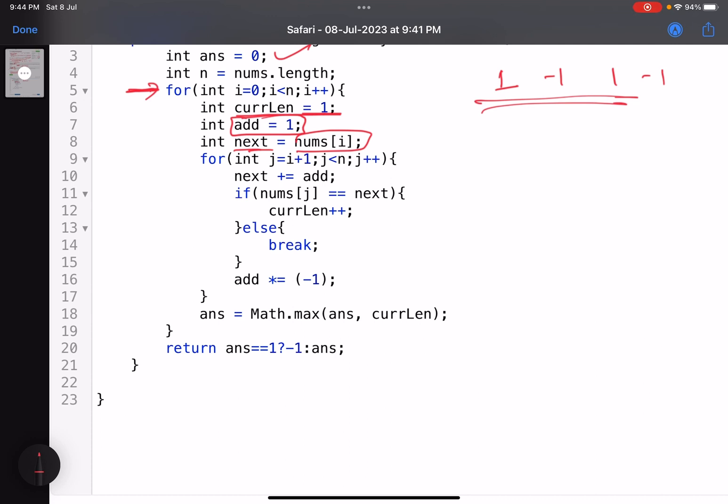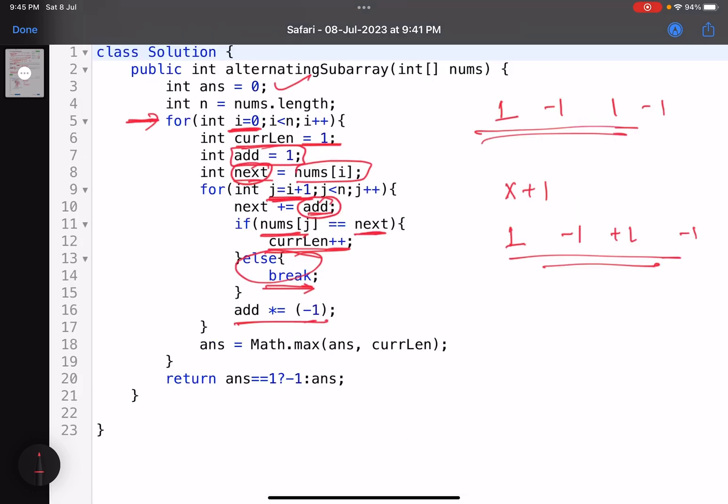So i is the current position. I start with i equals 0, so the next element should be... j will start from i plus 1. So what should be the next element? Whatever was my previous element plus add. If I start from x, it should be x plus 1. So if nums[j] equals next, current length plus plus, else just break the loop. Getting it? If this is valid, if you do not break the loop, add equals add minus 1. So that means if add is plus 1, it becomes minus 1 in the next step, then plus 1 in the next step, minus 1 in the next step, and so on.